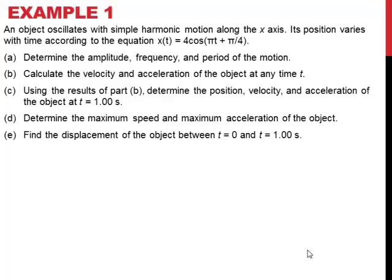Here is example 1. An object oscillates with simple harmonic motion along the x-axis. Its position varies with time according to the equation x(t) equals 4 cosine(πt + π/4). Part a is to determine the amplitude, frequency, and period of the motion. Part b is to calculate the velocity and acceleration of the object at any time t. Then using the results of part b, determine the position, velocity, and acceleration of the object at t equals 1 second. Part d, determine the maximum speed and maximum acceleration of the object. And part e, find the displacement of the object between 0 and 1 second.